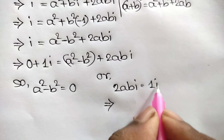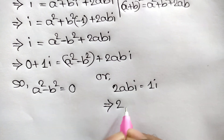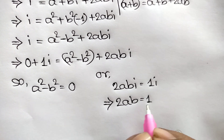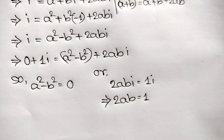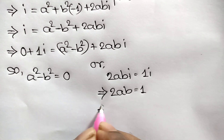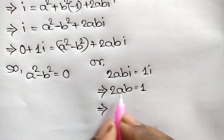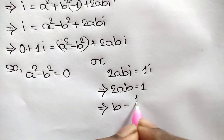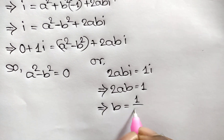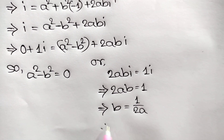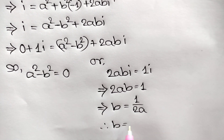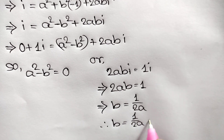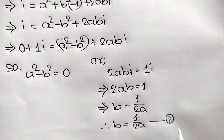Cancelling i from 2ab·i = 1·i gives 2ab = 1. Dividing both sides by 2a, we get b = 1/(2a). This is called equation number 2.